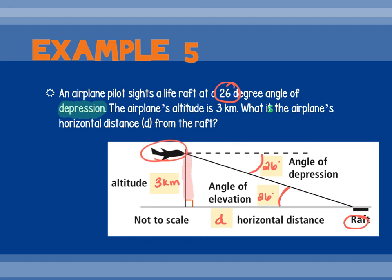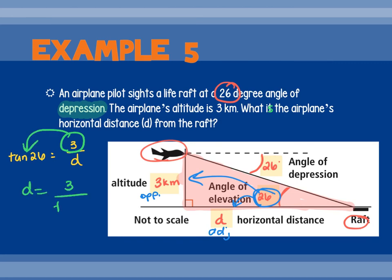Here's my angle. 3 is where in respect to that angle? Opposite. D is what? Adjacent. What trig function uses opposite and adjacent? Tangent. So the tangent of 26 equals opposite, which is 3, over adjacent, which is D. Numbers in the top. So we do what? Divide this by that. So D equals 3 divided by the tangent of 26. 6, and it says round, let's round to the nearest tenth. 6.2 kilometers. Questions?